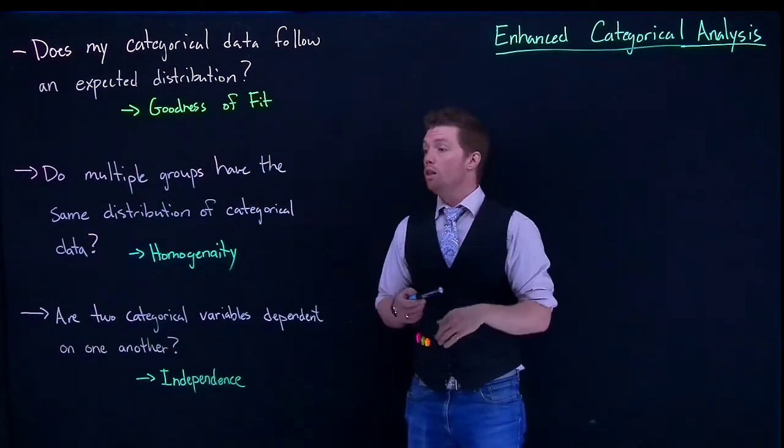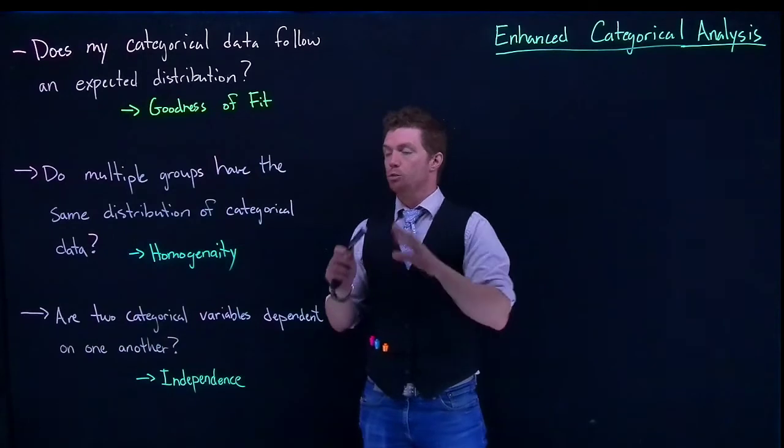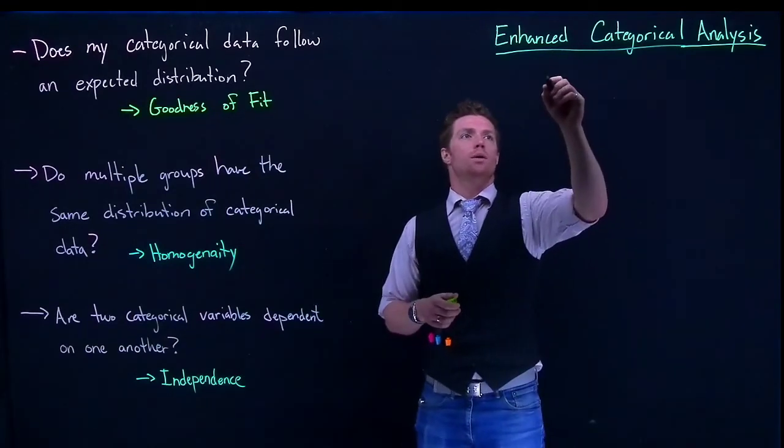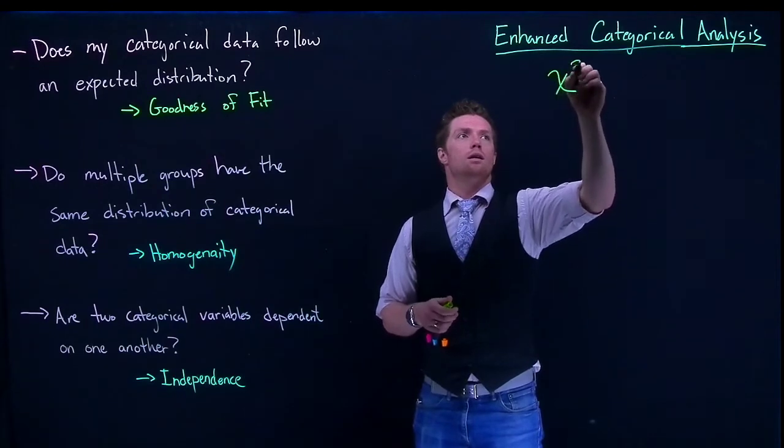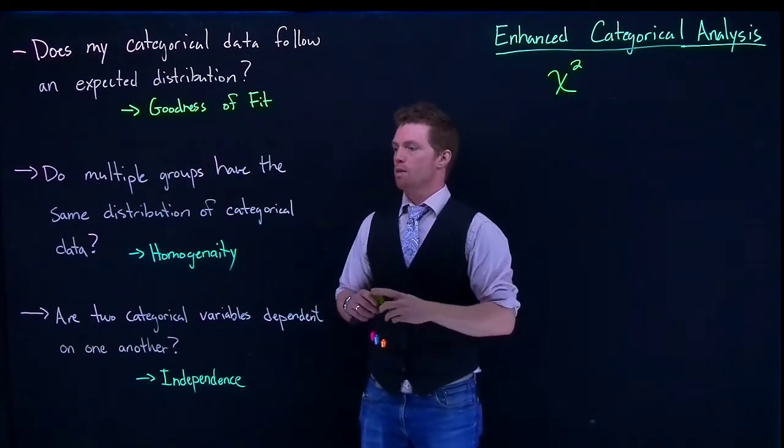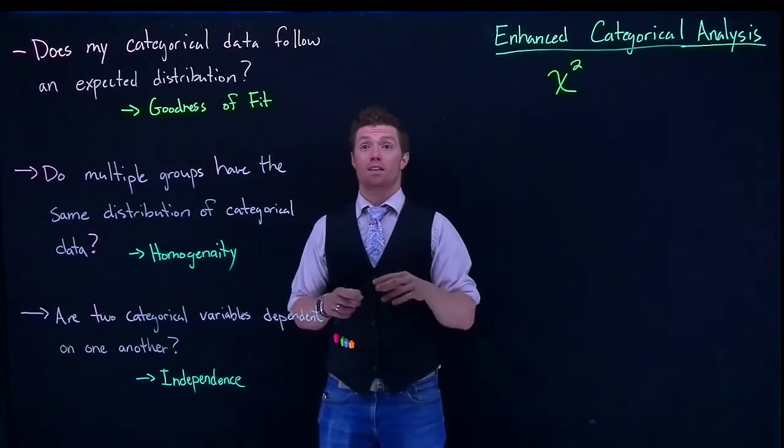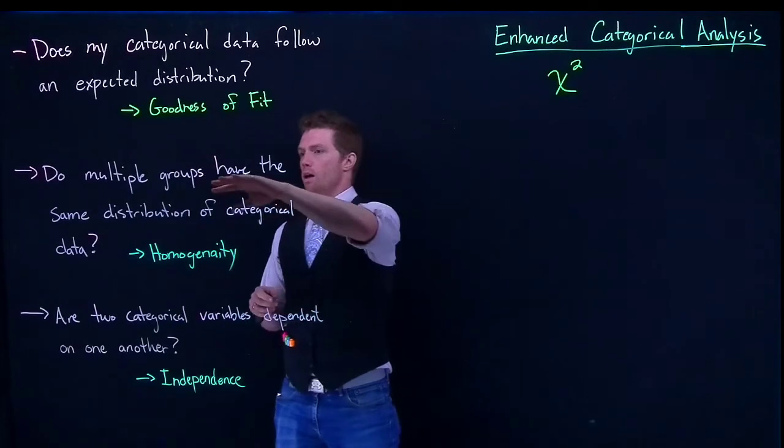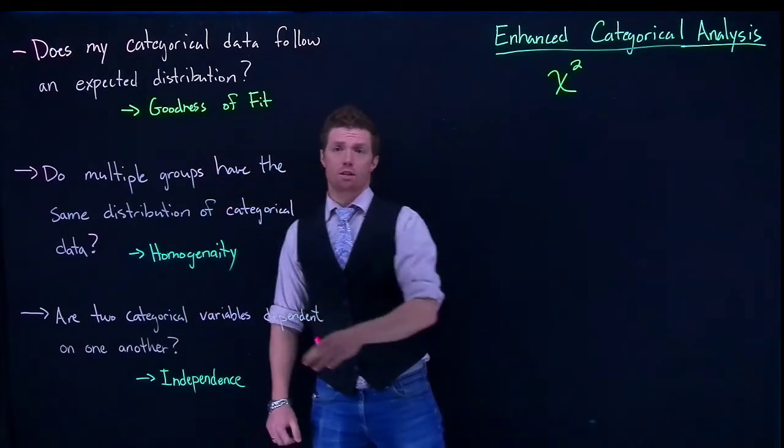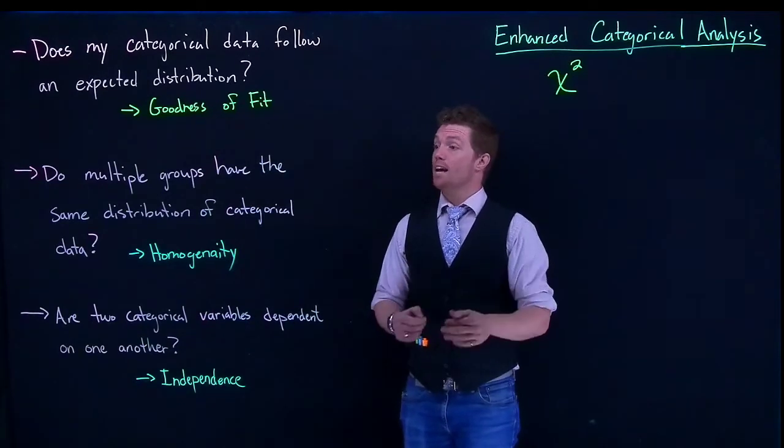Using all of these different methods, we are going to be using the chi-squared distribution to help us out with this. What's interesting is that mathematically there are really only two methods. These two—the test of homogeneity and the test of independence—the mathematics behind them are identical.